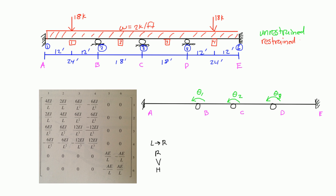At E there is a rotational degree of freedom, but it's restrained because that joint supports a moment. So now we move to the restrained rotational degrees of freedom, continuing our numbering. At A, the restrained rotational degree of freedom is theta four. Then at E, that is also a restrained degree of freedom. So we're done with both unrestrained and restrained rotational degrees of freedom.